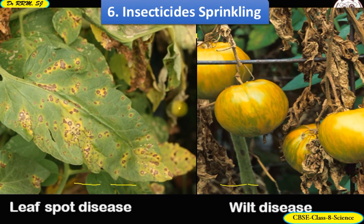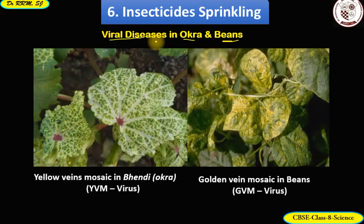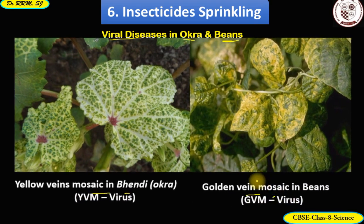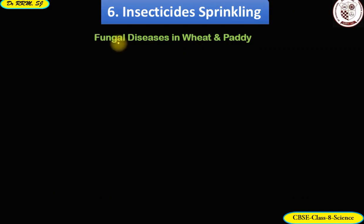Two examples of viral diseases: in bhindi (okra) the first is yellow vein mosaic disease — see how the veins of the leaves have turned yellow. The second is golden vein mosaic disease in beans, where veins turn golden yellow. Easy to remember: YVM virus and GVM virus — yellow vein mosaic and golden vein mosaic diseases caused by viruses.